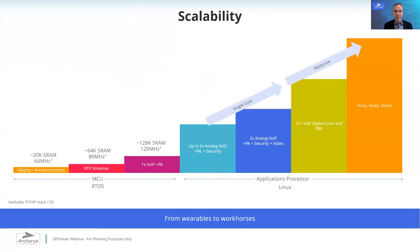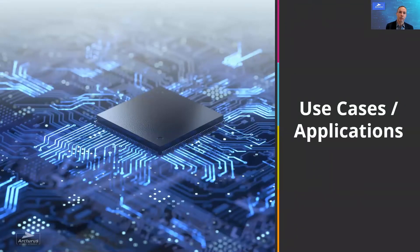At the low end, SIPX Stream provides a simple method to play back local announcement files using about 20K of SRAM and a microcontroller. Using a microcontroller, we can add unicast or multicast audio streaming, or even full duplex VoIP in 128K of SRAM. We then make this transition when we scale up to a Linux system, which offers all of these services concurrently, adds VoIP security, and then we can scale these instances to become multi-channel or add video and vision functions at the high end. To help frame the scalability, we can take a look at some of the common use cases and applications.